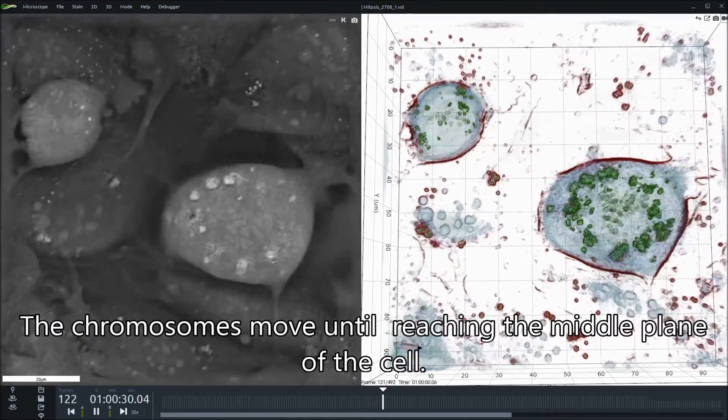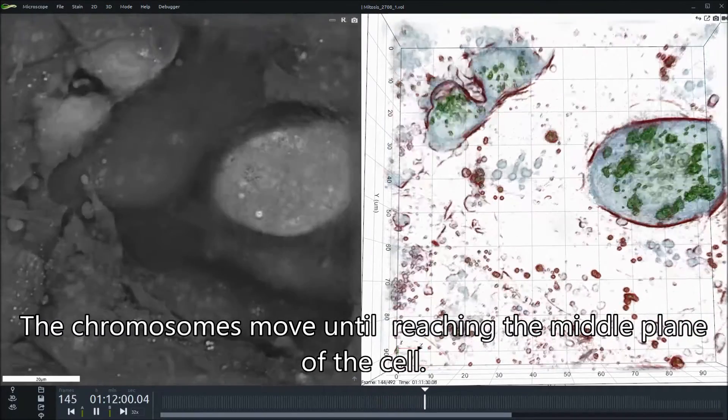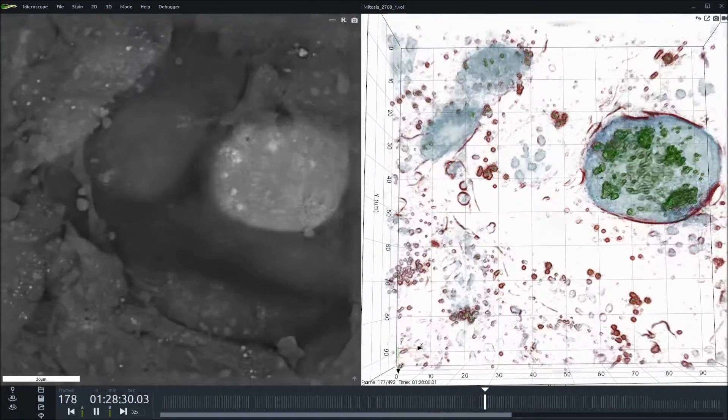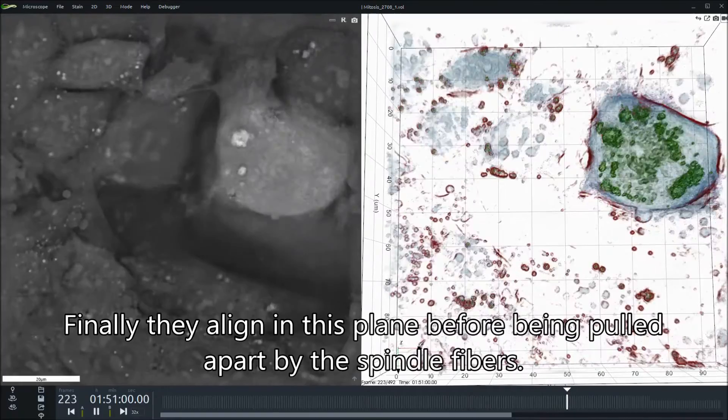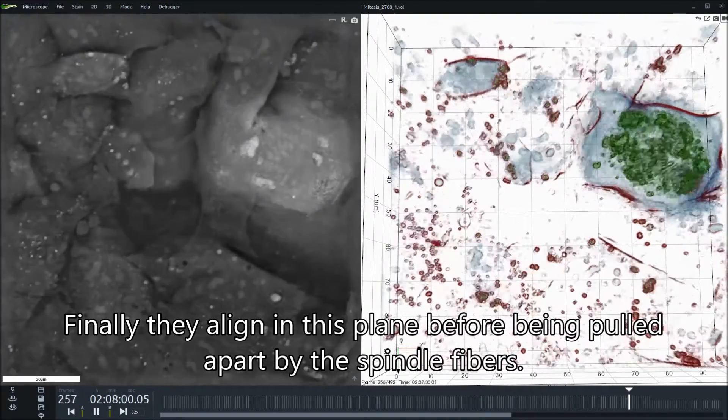The chromosomes move until reaching the middle plane of the cell. Finally, they align in this plane before being pulled apart by the spindle fibers.